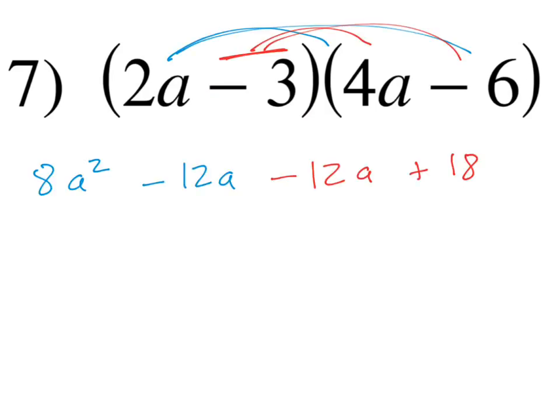All right, here's your first step here, the distribution step. So I distributed 2a times both of these, and that generates 8a squared and subtract 12a. And then you have to take negative 3 and times by both of these, and that will generate negative 12a or subtract 12a, and plus 18 because negative 3 times negative 6 gives you positive 18. So now we're at this point.